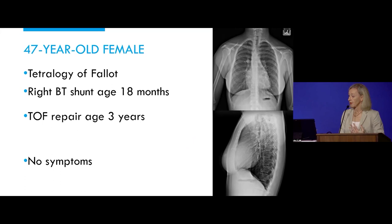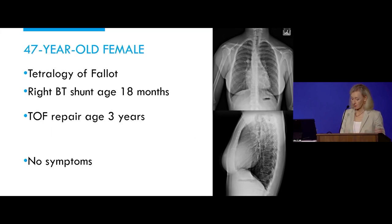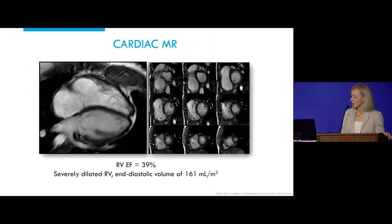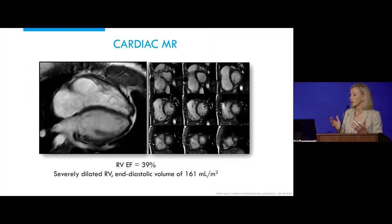She had a right Blalock-Taussig shunt at 18 months of age, and then, as was done in the previous era, tetralogy repair at age three years. She had no symptoms, and she has severe pulmonary valve regurgitation and, as you noticed, significant right heart enlargement.